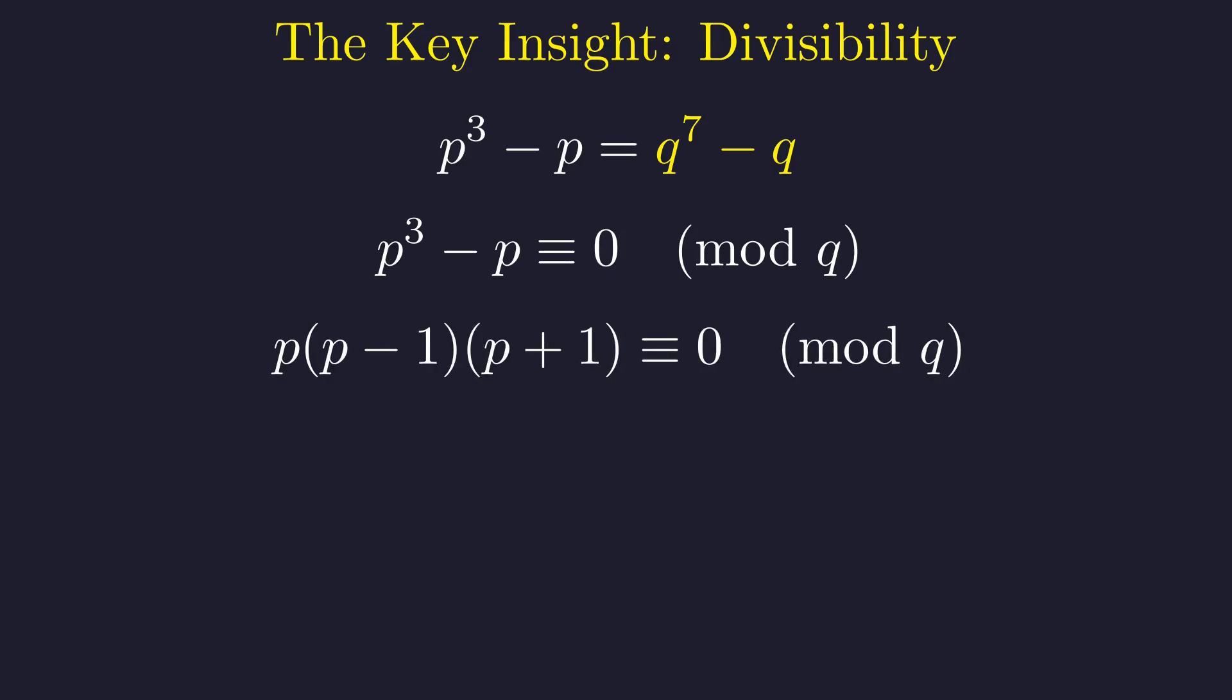Factoring the left side yields p times p minus 1, times p plus 1. Since q is prime, if it divides this product, it must divide at least one of the factors. This presents three cases: q divides p, q divides p minus 1, or q divides p plus 1. As p and q are distinct primes, q cannot divide p.